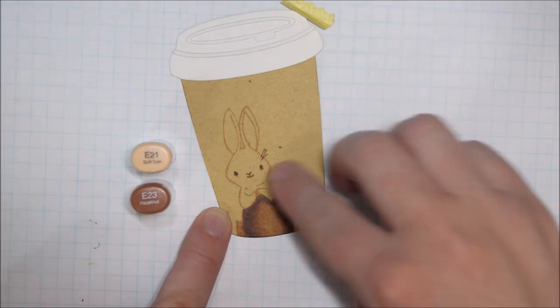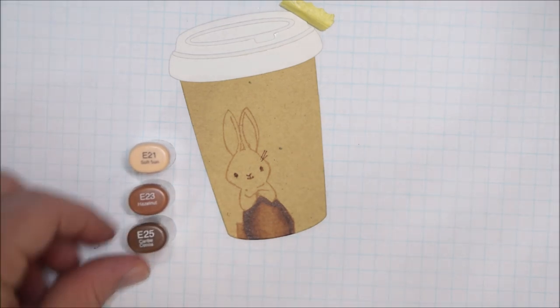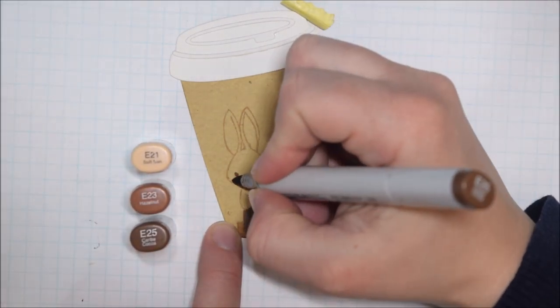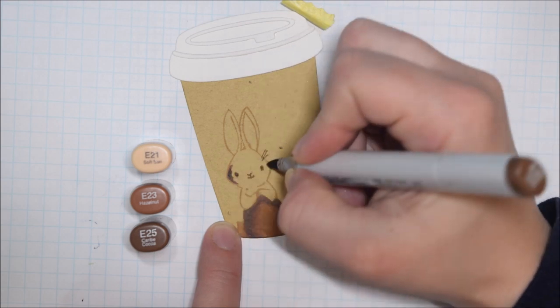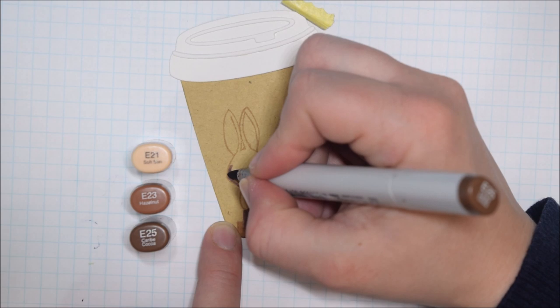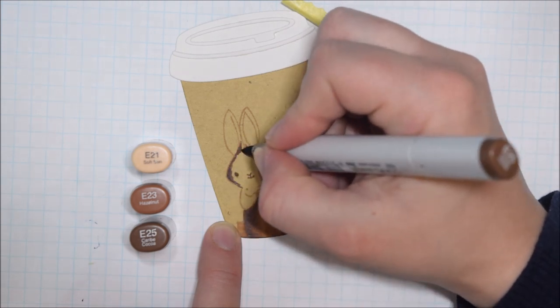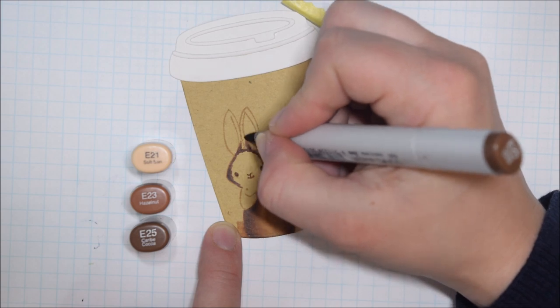I used brown for that reason. I'm coloring with the E2s - so E25, E23, and E21. Copics, when you color them on craft, they're not as dark as they would be on white. So I am by no means an expert in how to no-line color.